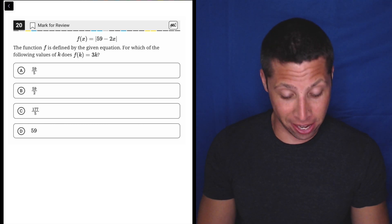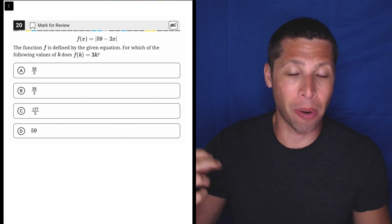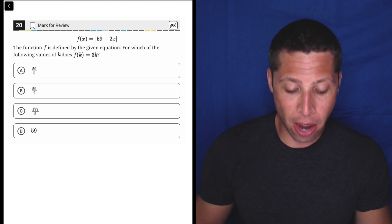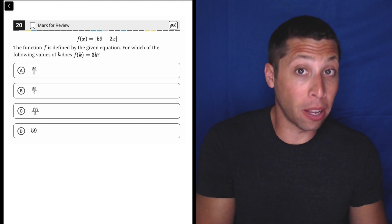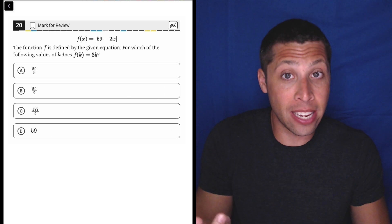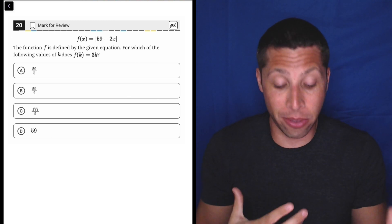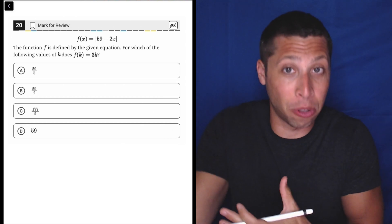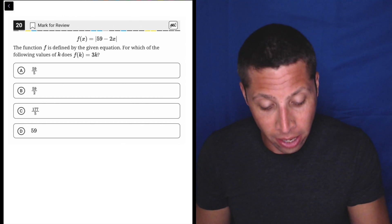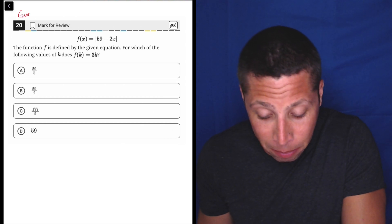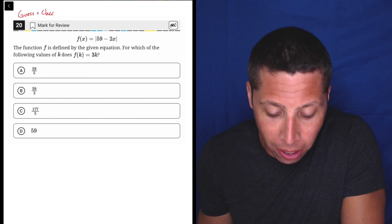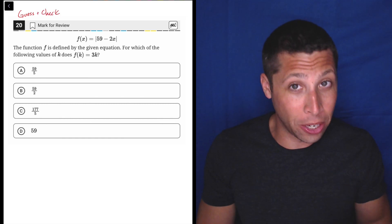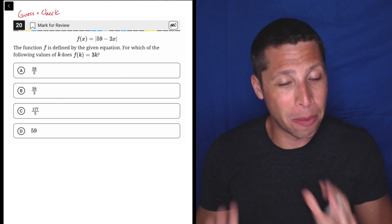First and foremost, we could guess and check here, right? Because the answer choices represent something very simple. They are the values of K. So we could plug those in for X. And then we could see if when we resolve the absolute value thing, we get a number that is the answer choice times three. So we could guess and check here. I don't think that's going to be super easy because the answer choices are mostly weird. So I'm not going to show you that method, but it's possible.